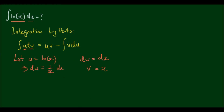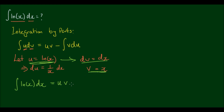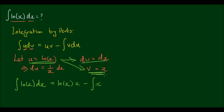So now that we have these, let's substitute them — I'll use a different colour. The integral of u, which is ln x, dv, which is dx, is equal to u times v, which is x ln x, minus the integral of v times du, which is x times 1/x dx.